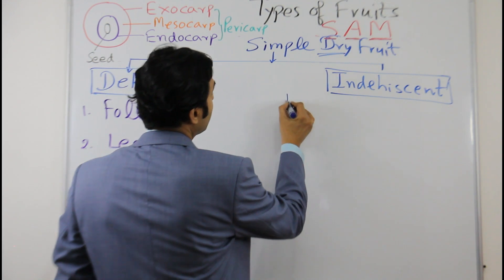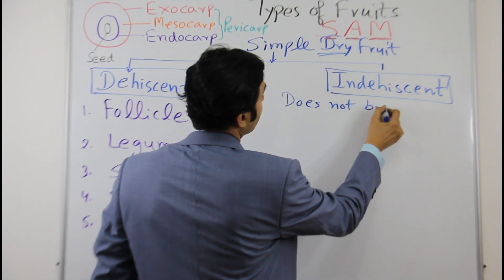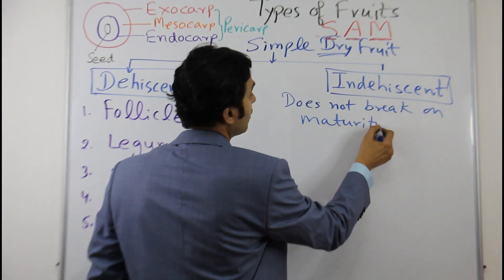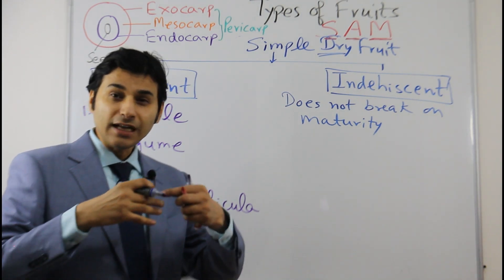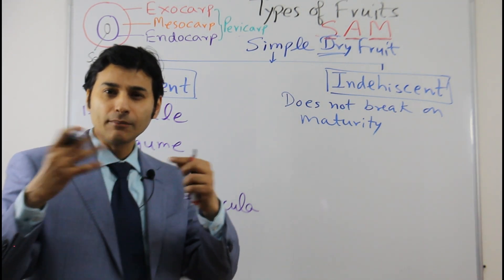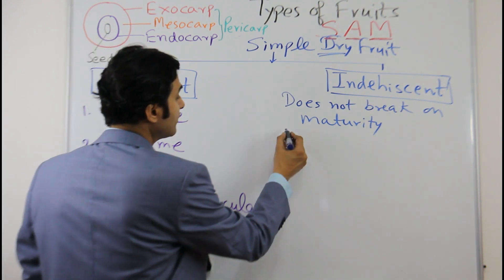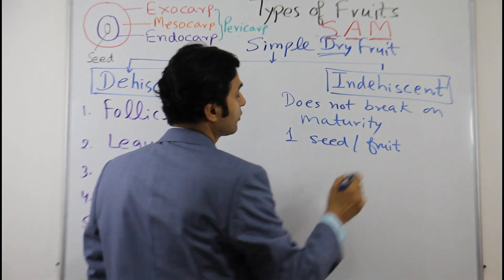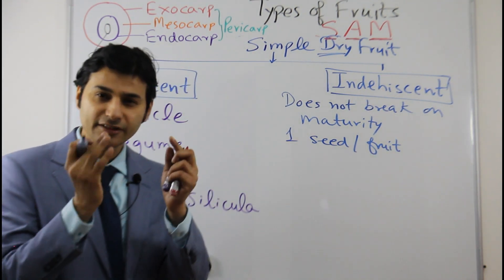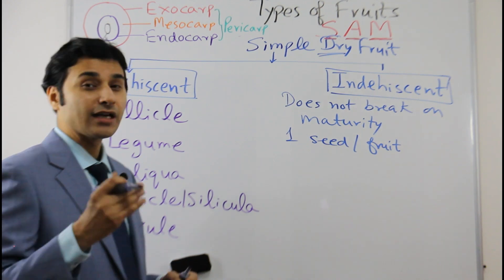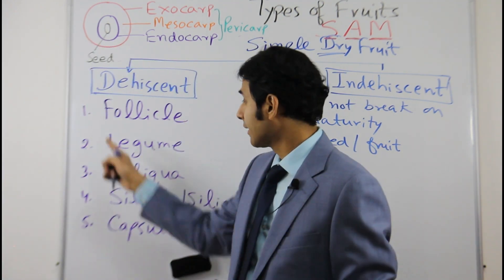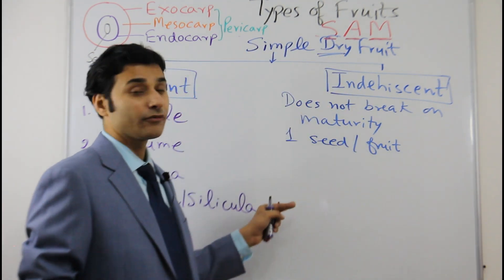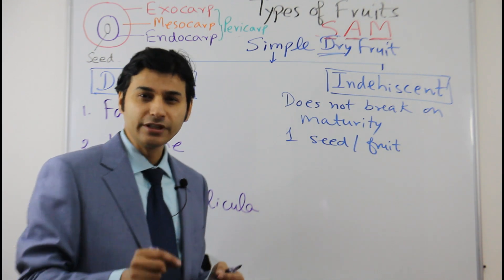Indehiscent is a type of fruit which does not break on maturity. Because it does not break, it will not liberate seeds. Unlike dehiscent fruit, it generally has only one seed per fruit, and the seed is tightly packed inside. It is also of different types, so here we have different types of indehiscent fruit.